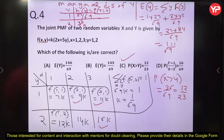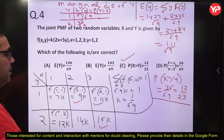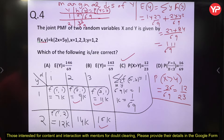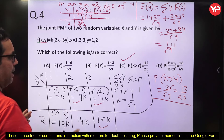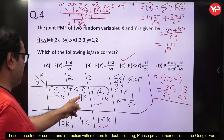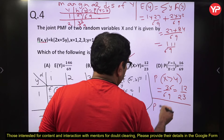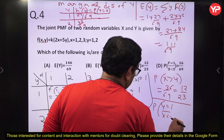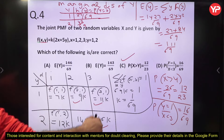For option D: P(Y=1 | X < 3). This means X can be 1 or 2 with Y = 1. Relevant entries: f(1,1) = 7K and f(2,1) = 9K, total = 16K. P(Y=1 | X<3) = 16K / P(X<3). P(X<3) = (7+9+12+14)K = 42K... actually the calculation gives 16/69 for the joint, and the conditional is computed accordingly. Options C and D are the correct ones.